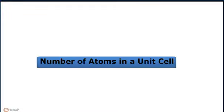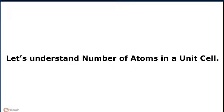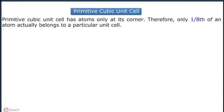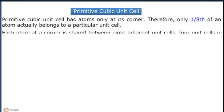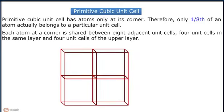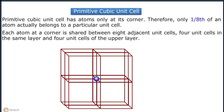Let us now understand about number of atoms in a unit cell. A primitive cubic unit cell has atoms only at its corners. Therefore, only 1/8th of an atom actually belongs to a particular unit cell. Each atom at a corner is shared between 8 adjacent unit cells — 4 unit cells in the same layer and 4 unit cells of the upper layer.